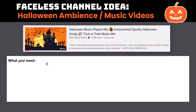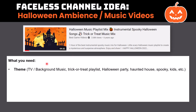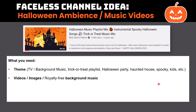So what do you need? You need a theme. There are a lot of different Halloween style videos out there and you want to make something a little different from what other people have. Your theme could be TV background music, a trick-or-treat playlist, Halloween party, haunted house — whether it's spooky or for adults or for kids. You're going to need videos, images, and royalty-free background music. I'll show you where to get that, plus animations and effects, which are optional but recommended to make your videos more interesting.